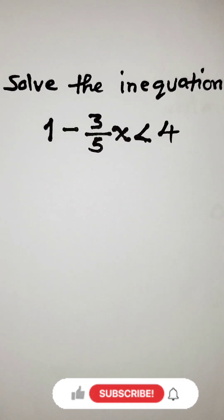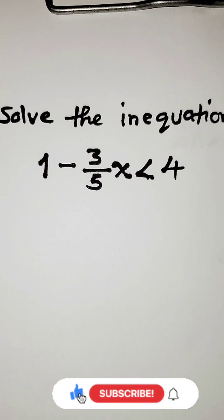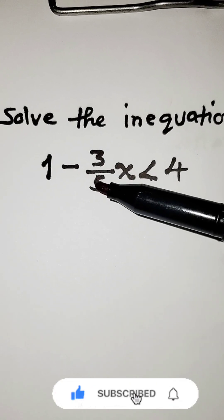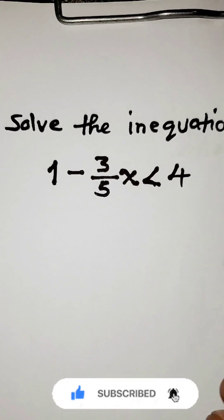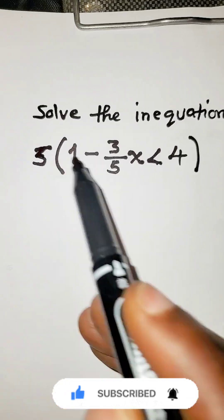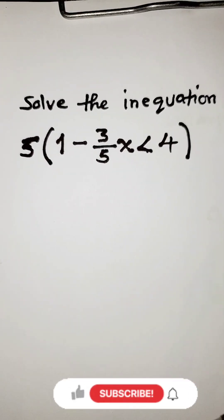Hello guys, to solve this inequality, we are going to simply look at the term which has a fraction and then get the denominator of the fraction and multiply it through. This is a 5, multiply through the inequality.